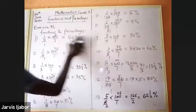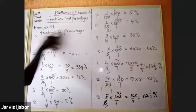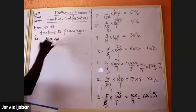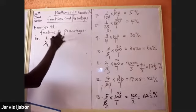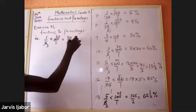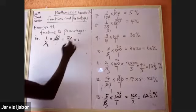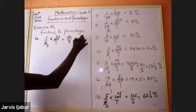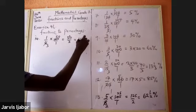Question 14: 1 over 6 times 100 over 1 — 2 goes into 6 three times, 2 goes into 100 fifty times — giving 50 over 3. 3 goes into 50 sixteen times remainder 2, so the answer is 16 and two-thirds percent.